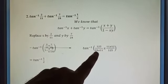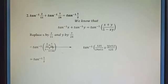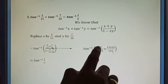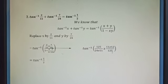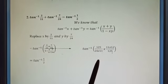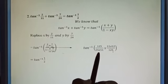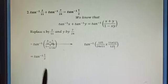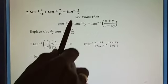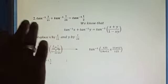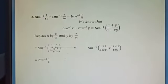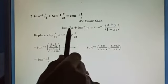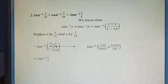On simplifying, the numerator gives 125/(24×11) and the denominator gives 12/(24×11) scaled appropriately. The 125s cancel, 11s cancel, and 12/24 simplifies to 1/2. So the right-hand side equals tan⁻¹(1/2), which equals the left-hand side. Hence proved using the addition formula.